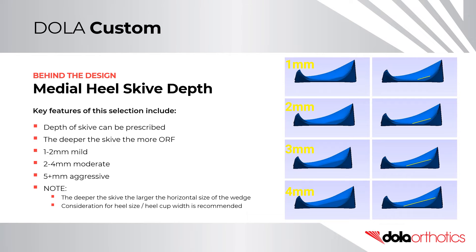The depth of the skive is prescribed by the practitioner. The deeper the skive, the more orthotic reaction force created. A one to two millimetre skive will be mild orthotic reaction force, two to four millimetres moderate, and greater than five millimetres aggressive. Note: the deeper the skive, the larger the horizontal size of the wedge. Consideration for heel size and heel cup width is recommended.